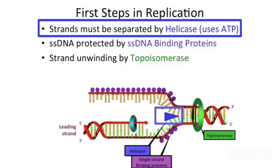What has to happen first? Well, first, we need the strands to be separated so that we can read the bases and know what the sequence of the complement should be. This is done by a protein called helicase, which uses ATP as an energy source. Recall that in a double helix, the strands are held together by hydrogen bonds between the bases and are stabilized by base stacking. Separating these interactions requires energy, so the separation is coupled to ATP hydrolysis.